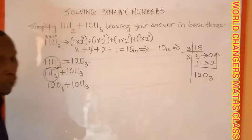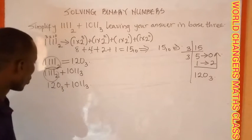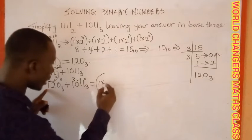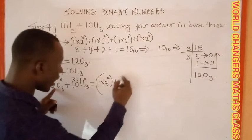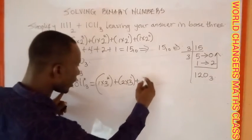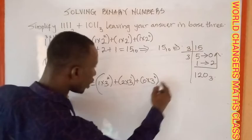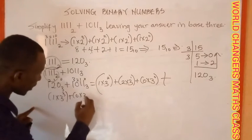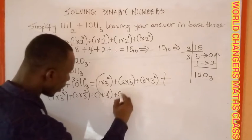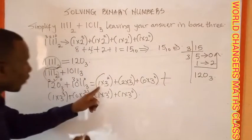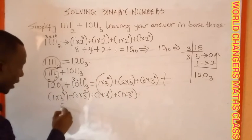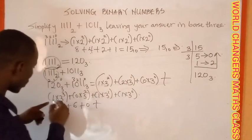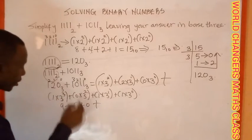Now I convert both numbers to base ten. For 120 base three: one times three raised to power two, plus two times three raised to power one, plus zero times three raised to power zero. For 1011 base three: one times three raised to power three, plus zero times three raised to power two, plus one times three raised to power one, plus one times three raised to power zero. Three raised to power two is nine, nine times one is nine. Plus three raised to power one is three, three times two is six. That zero gives zero. Three raised to power three is 27, 27 times one is 27. That term is zero. Three raised to power one is three, and the last term is one.